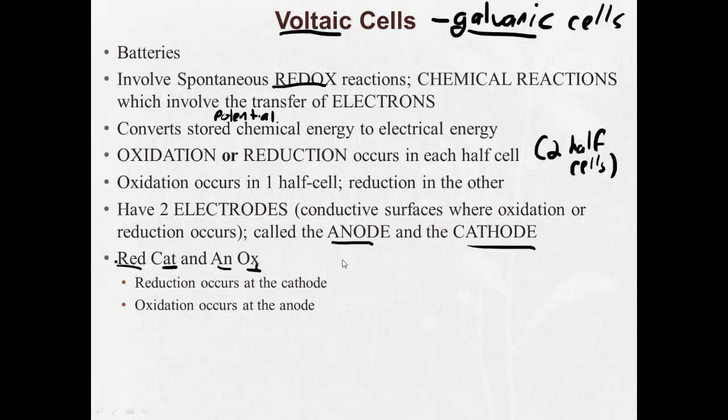So we had to memorize OIL RIG. Oxidation is losing, so you're losing electrons. Oxidation at the anode. Reduction is gaining at the cathode. They're going to go together.